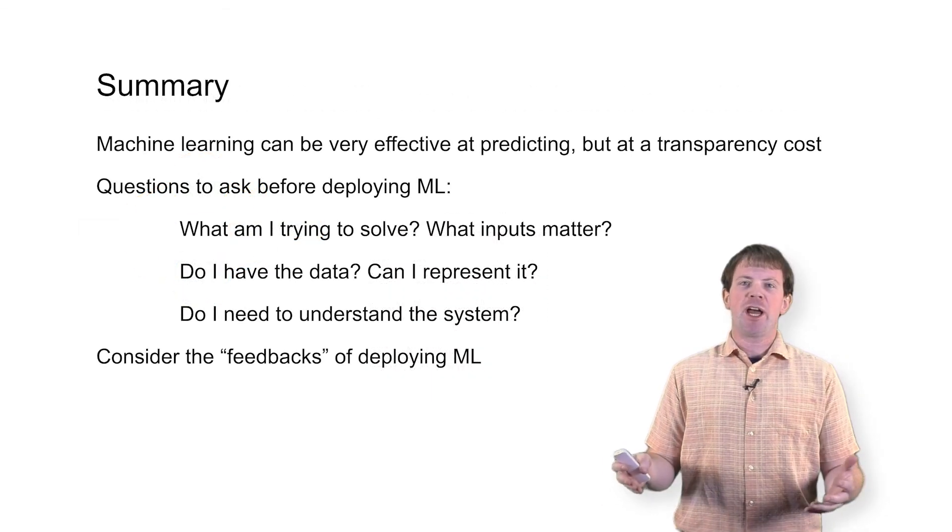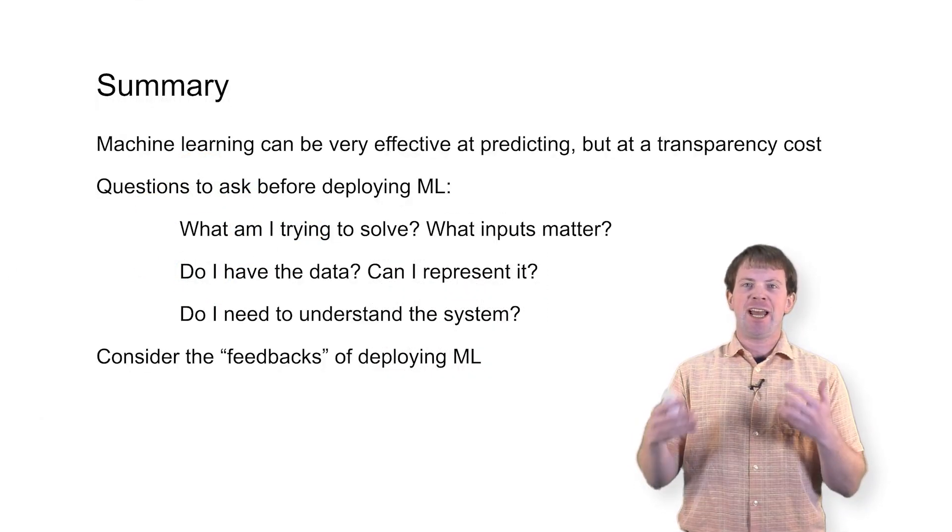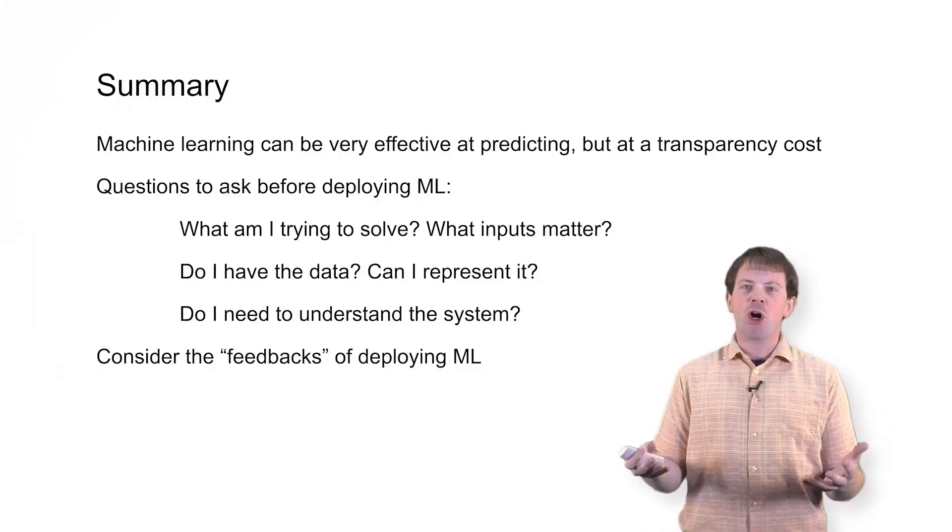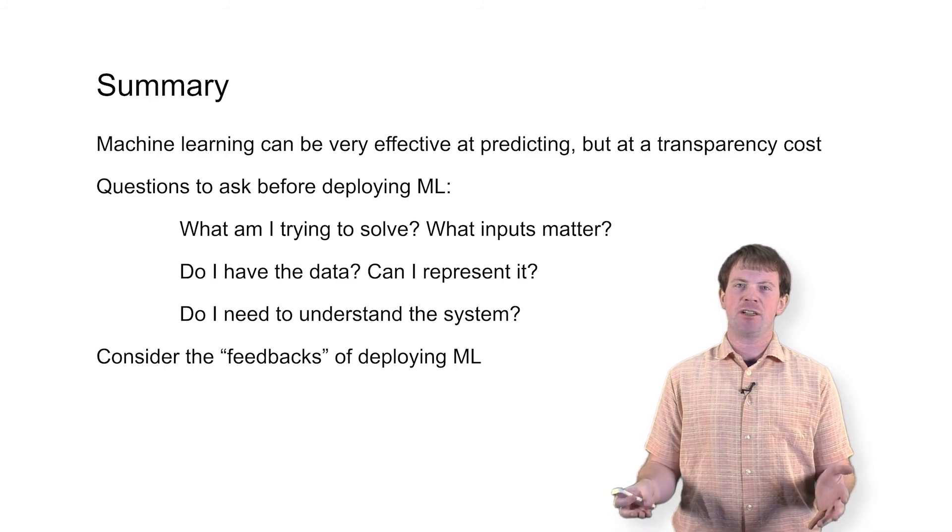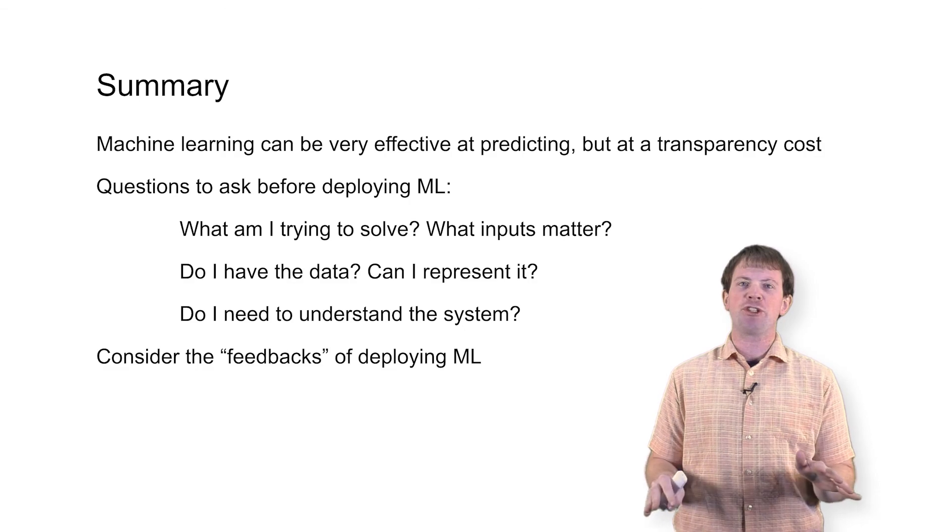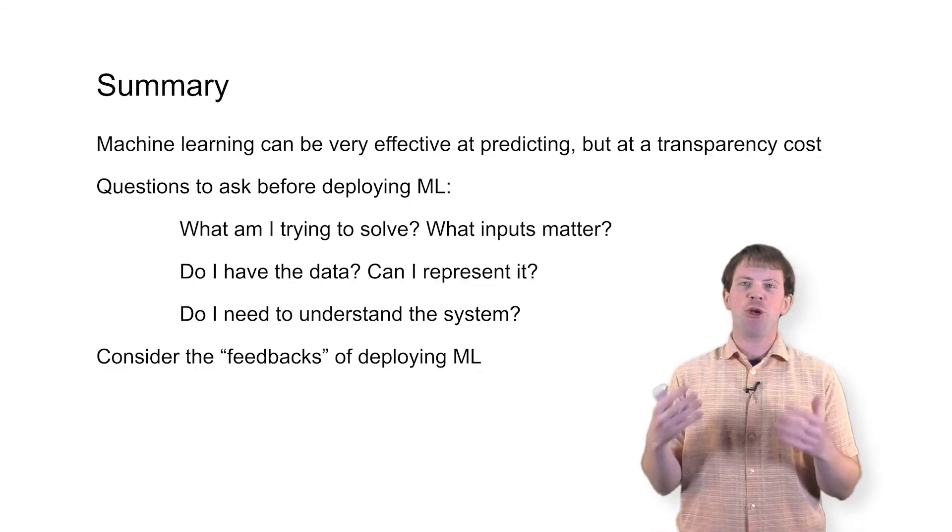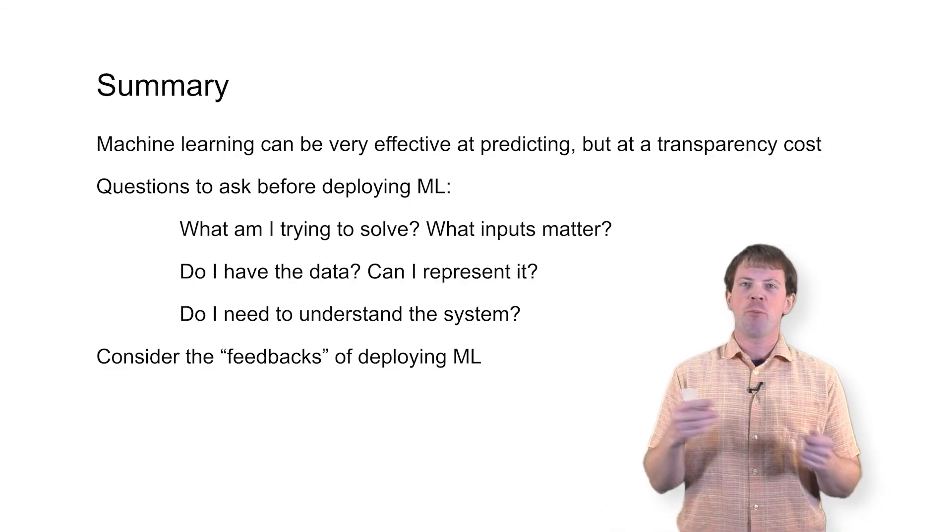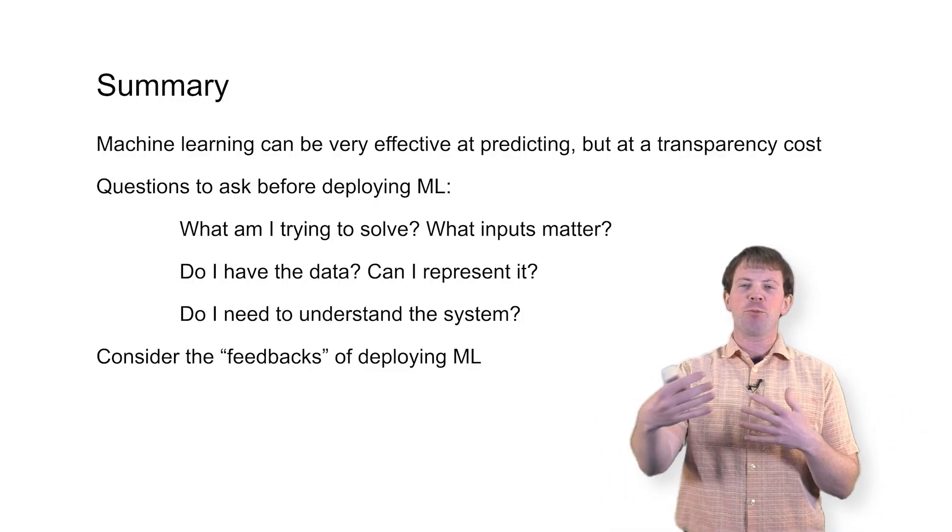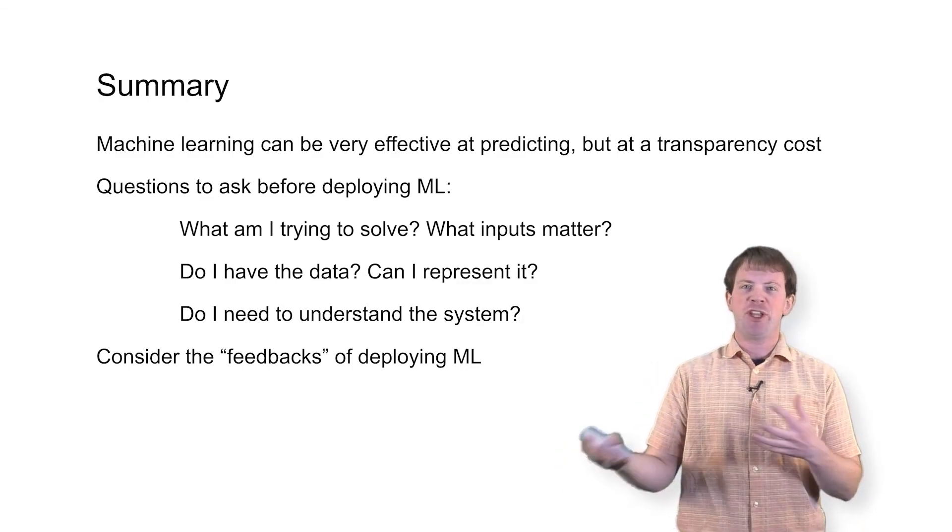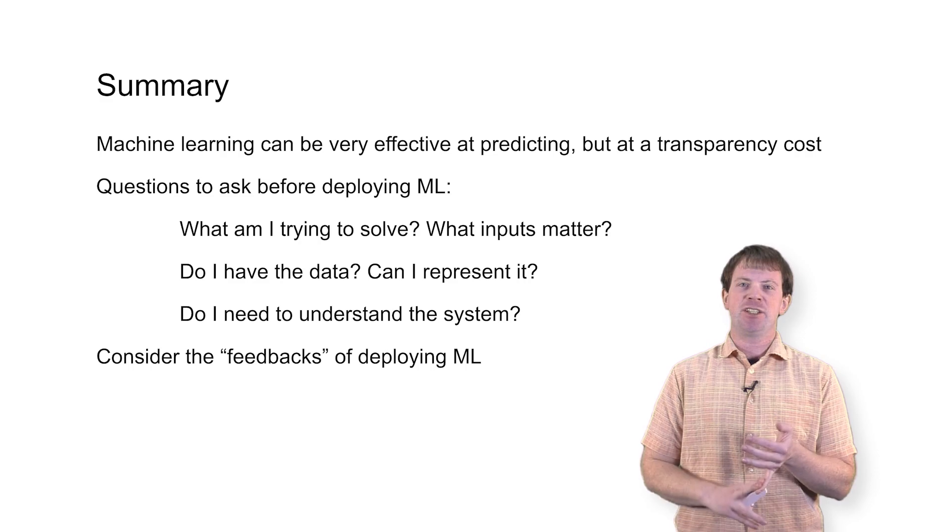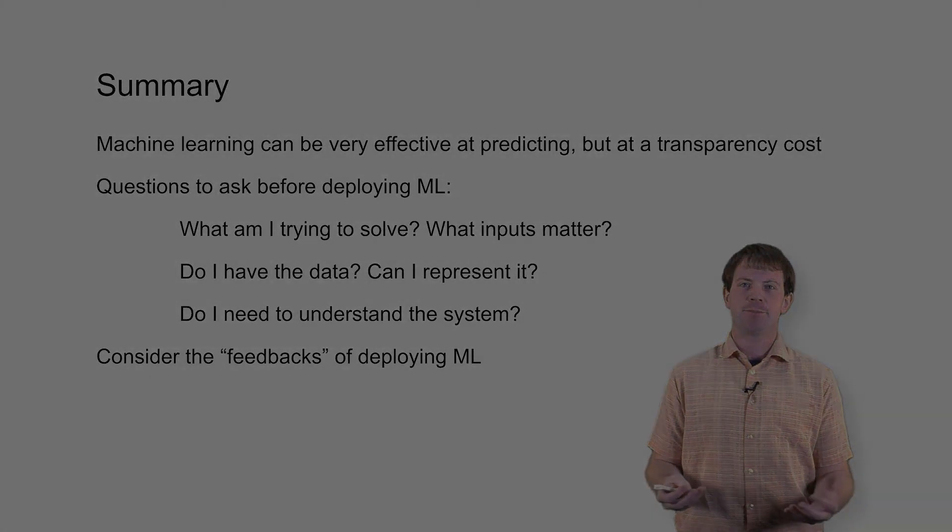So to summarize, machine learning is good and has made lots of major advances on problems that previously had been hard. However, there are these really important caveats to consider. And so our advice to you is to have clean data and clear questions before you start to think about algorithms. Make sure you have what you need to answer the question before you think about ways of how to answer the question. And also then, before you deploy this system, we encourage you to think about all of these caveats that we've mentioned. For example, transparency and different kinds of feedbacks that the system might have with itself. We'll see you next time. Bye.